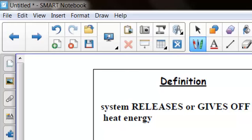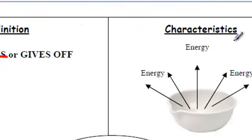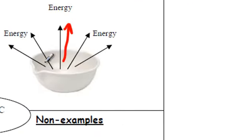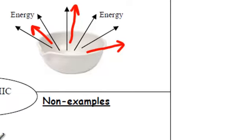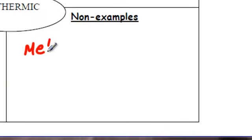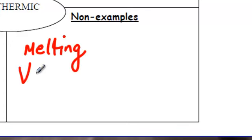So, exothermic, remember, the definition of exothermic means release. It gives off heat energy. So, here you see energy going out, away from the object. Examples of exothermic reactions are freezing and condensation. Those are exothermic, so non-examples would be the opposite of freezing. So, melting would be a non-example, and the opposite of condensation is vaporization, or as you know it, called boiling.